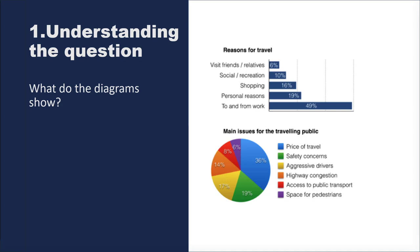There are two charts: one is a bar chart and the other is a pie chart below. They both represent a general idea about transport and traveling. The bar chart shows the various reasons — the main triggers — for people to travel. The pie chart shows the problems that the public come across while traveling. They both focus on one single topic: reasons for travel and problems while traveling. That is going to be your introduction.